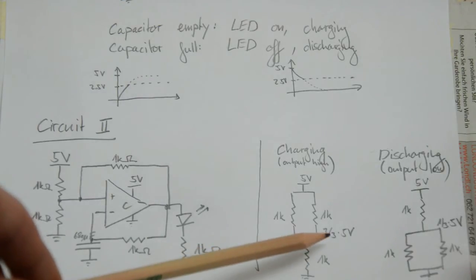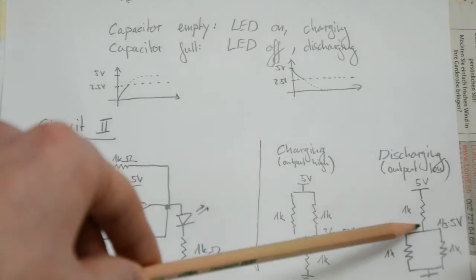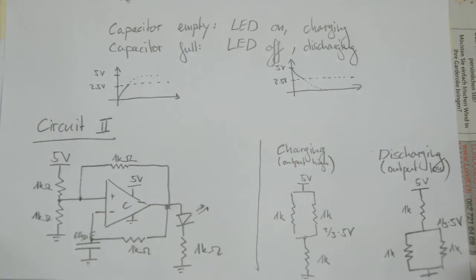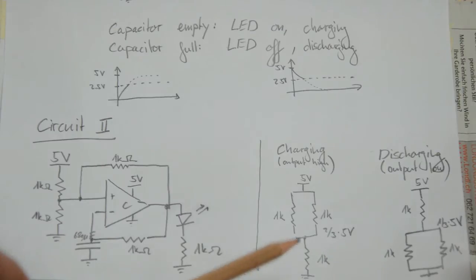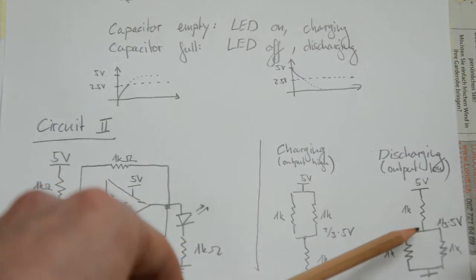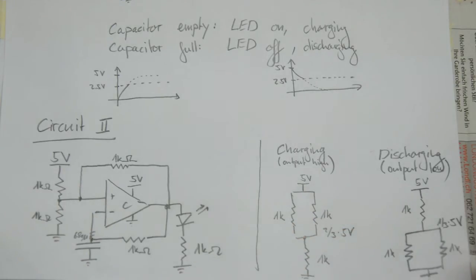Calculating this out, you get approximately 3.33 volts in one case and 1.67 volts in the other. The consequence of adding this resistor is that when charging the capacitor — when the comparator output is 5 volts — you have to reach not 2.5 volts but 3.33 volts to trigger the second stage. But as soon as you trigger the second stage, the bias voltage drops to 1.67 volts. So you have to go above 3.33 volts to trigger discharging, and then drop below 1.67 volts to return to charging. This is hysteresis.